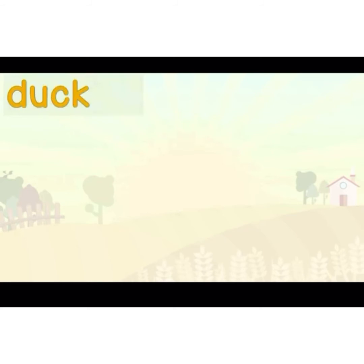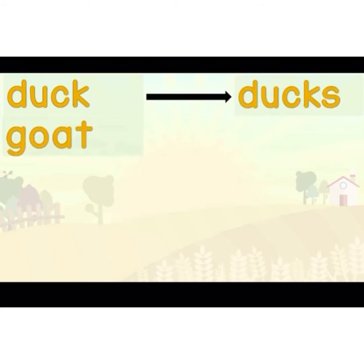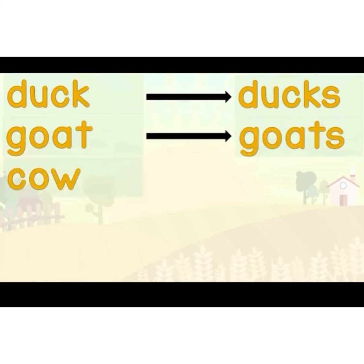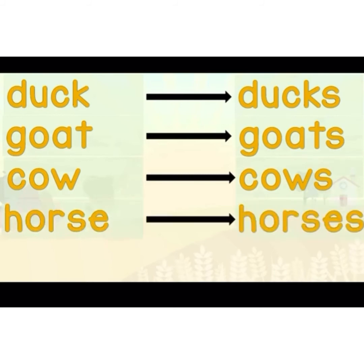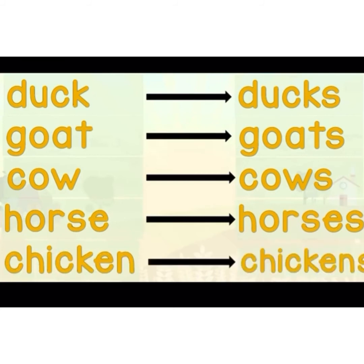Here are examples with animals — duck becomes ducks, tambah 's'. Goat becomes goats, cow becomes cows, horse becomes horses. Bila kat hujung dia ada 's' or 'e', awak tambah satu 's' kat hujung, okay — jadi horses.